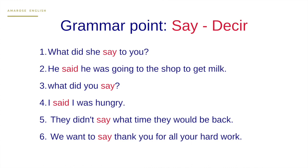What did she say to you? — that's a viewpoint. He said he was going to the shop to get some milk — that's expressing information. What did you say? — what did you comment? I said I was hungry — also a viewpoint. They didn't say what time they would be back — expressing information. We want to say thank you for all your hard work — we want to comment and express a feeling of gratitude. That's when we use 'say'.